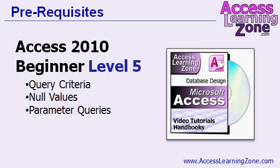This class follows Access Beginner Level 5, which is very important, especially for Lesson 1 in today's class where we make the address queries. Level 5 covers query criteria, null values — very important for today — and parameter queries.